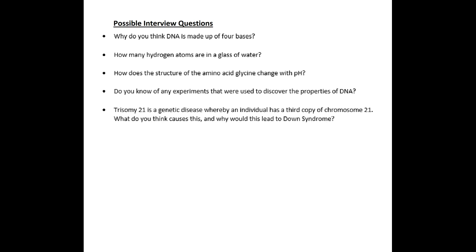Trisomy 21 is a genetic disease whereby an individual has a third copy of chromosome 21. What do you think causes this, and why would this lead to Down syndrome? How does a potassium channel discriminate against sodium even though the ion is smaller in diameter?